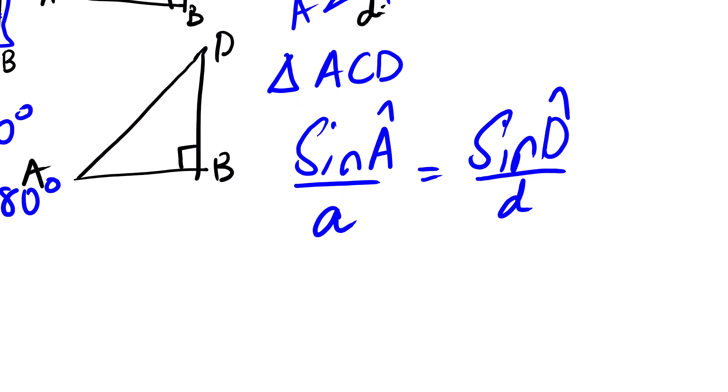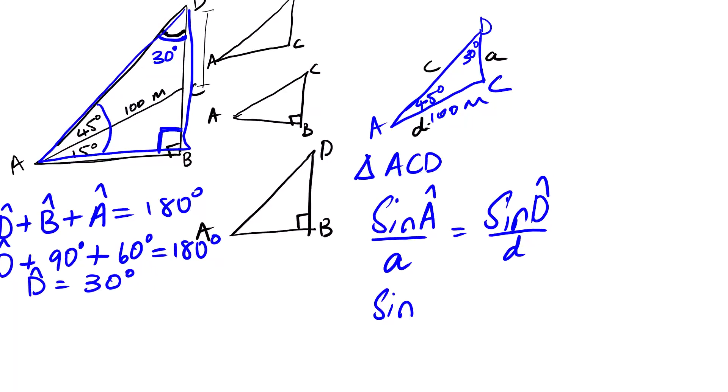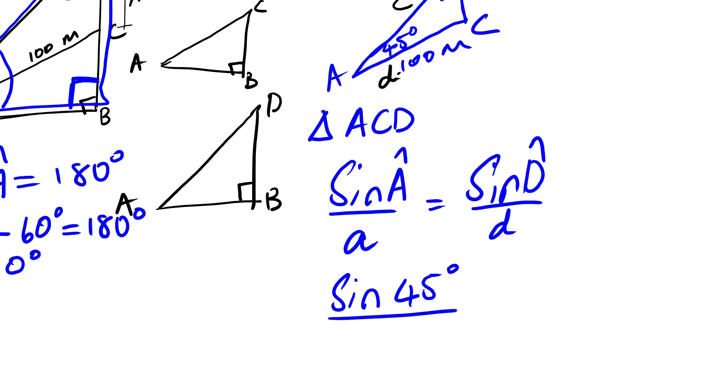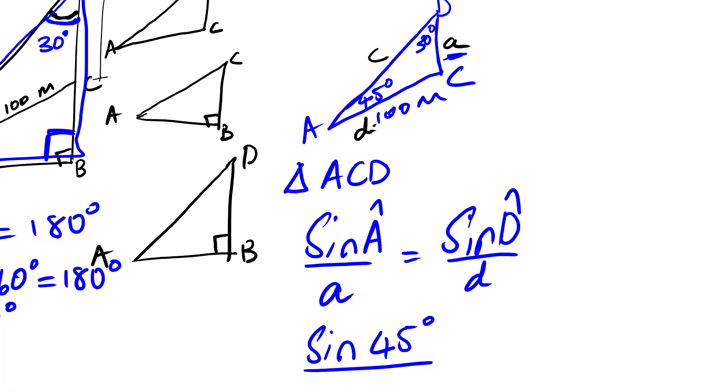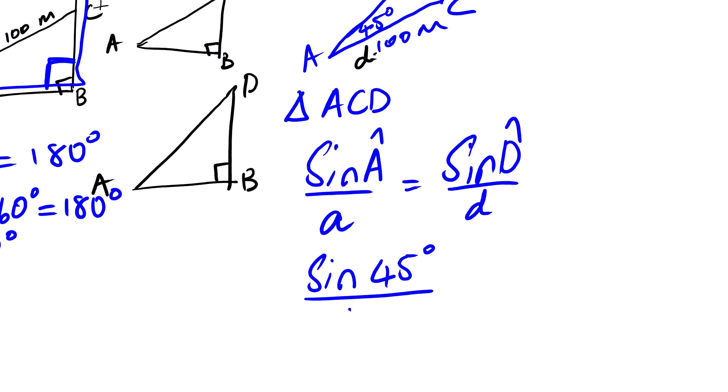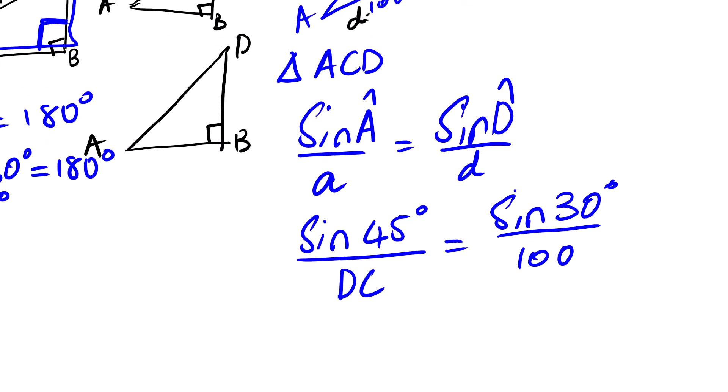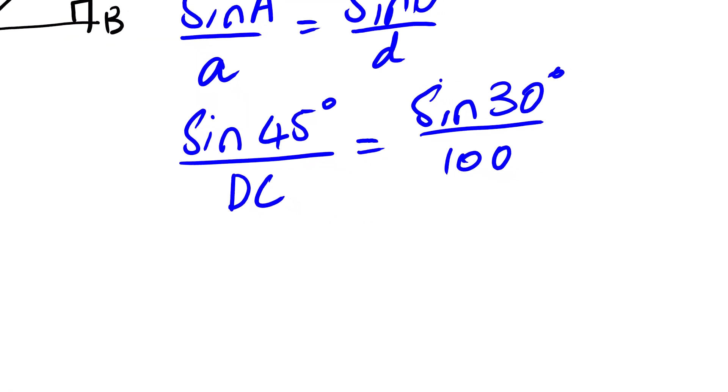From here we have sine, what is our sine A, it's 45, angle is 45 and then you're looking for this side which is DC. So we can say side DC equals to sine, the angle is 30 degrees over 100. Then from here we can simply solve.